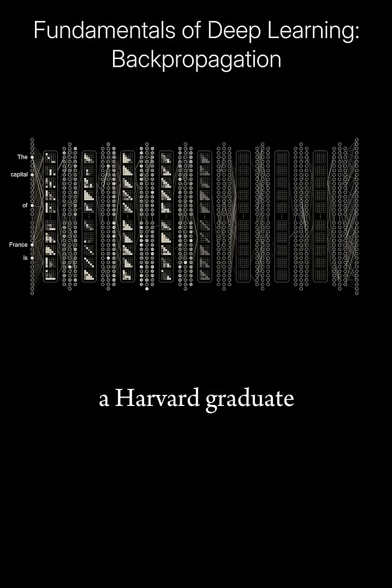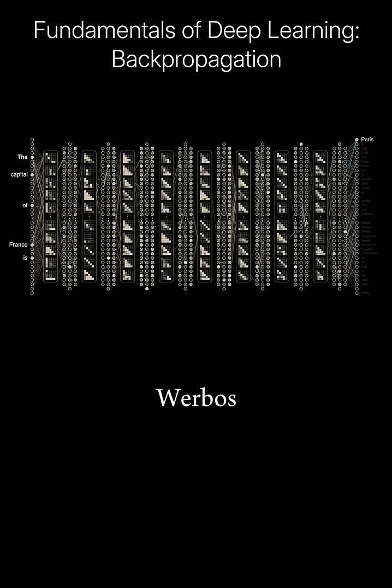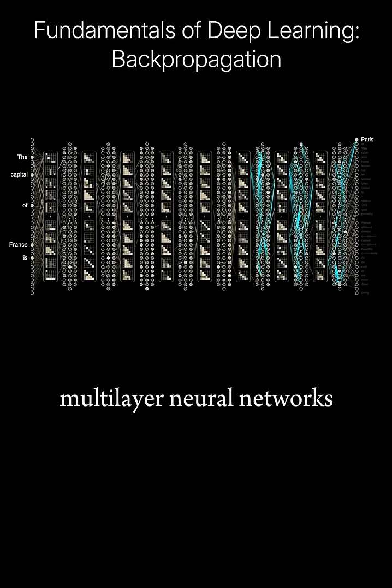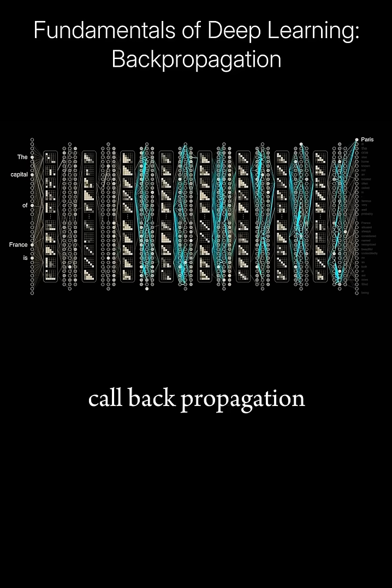In the early 1970s, a Harvard graduate student named Paul Worbos discovered a method for training multi-layer neural networks that we now call backpropagation.